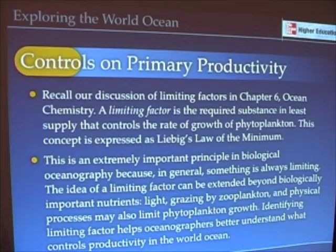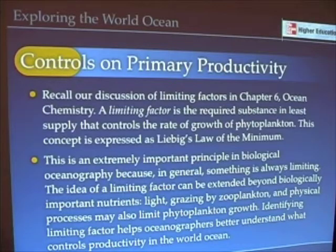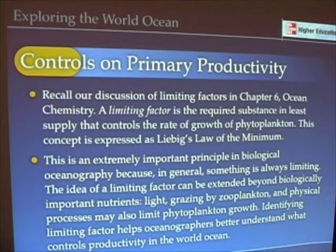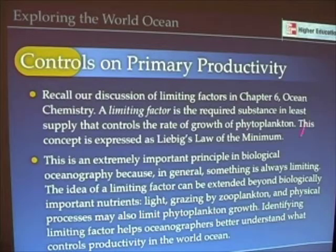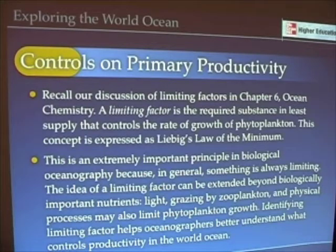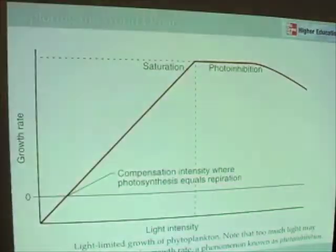Liebig's Law of the Minimum is a really important principle in biological oceanography, because in the ocean something is always limiting something else. Though our discussion focuses mainly on light and nutrients as controls on primary productivity, other things can also limit growth — grazing by zooplankton, physical processes, the dying off or sinking of phytoplankton. But we're going to focus primarily on light and nutrients.